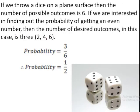For example, if we throw a dice on a plain surface, the number of possible outcomes is 6 because there are 6 faces. Now, if we are interested in finding out the probability of getting an even number, how many even numbers are there? 2, 4 and 6. There are 3 of them. So the probability is the outcomes we want, that is 3, divided by the total number of outcomes, that is 6. So the probability is 1 on 2 or 50%.